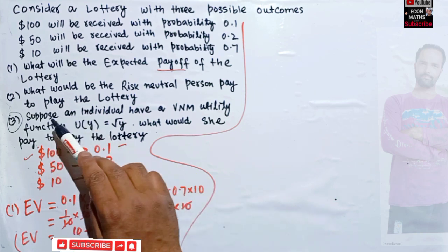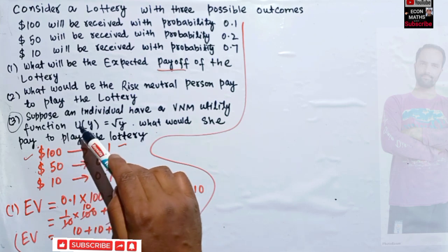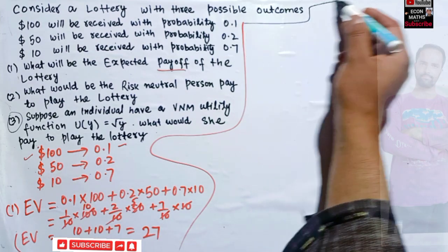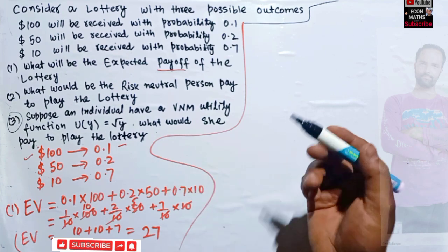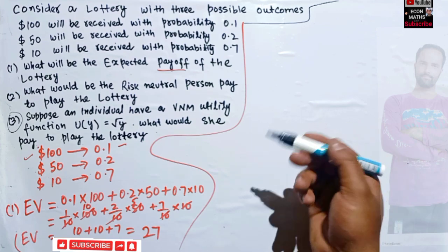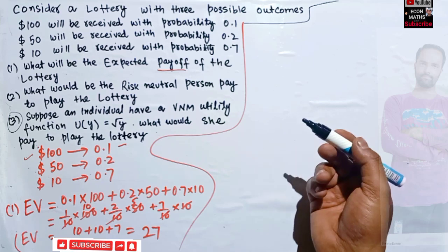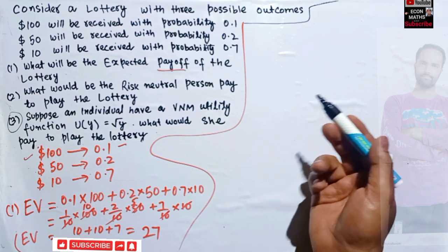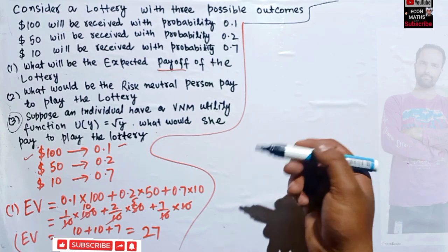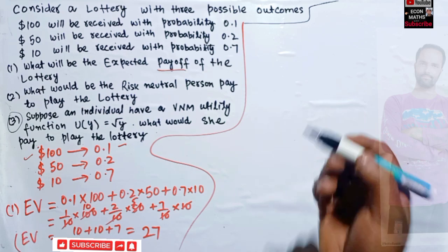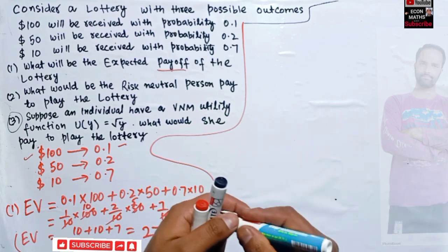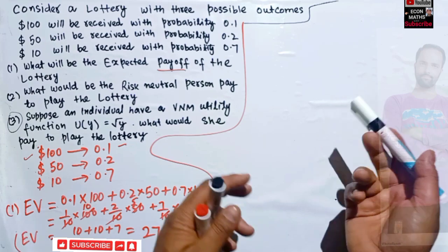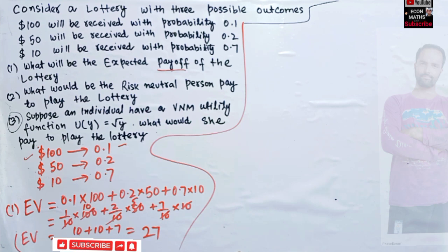Now let's solve the third part. We are told an individual has a VNM utility function u(y) = √y. What would she pay to play the lottery? Depending upon the utility function, a person would pay an amount equal to the certainty equivalent of the lottery. So first we need to find the certainty equivalent, which is a guaranteed level of value that provides the same amount of utility as the expected utility of the risky lottery.